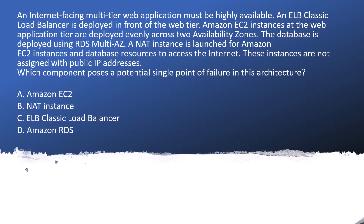Today's question is: an internet-facing multi-tier web application must be highly available. An ELB classic load balancer is deployed in front of the web tier. Amazon EC2 instances at the web application tier are deployed evenly across two availability zones. The database is deployed using RDS Multi-AZ. A NAT instance is launched for Amazon EC2 instances and database resources to access the internet. These instances are not assigned public IP addresses. Which component poses a potential single point of failure in this architecture?